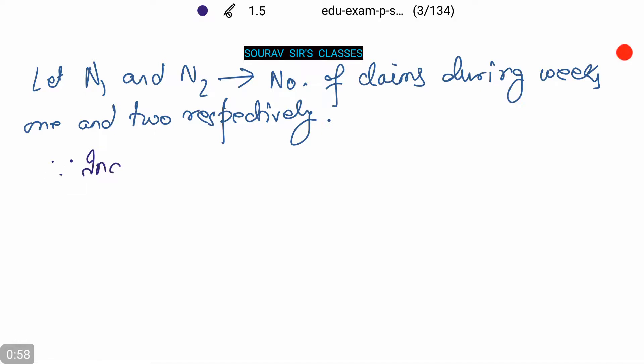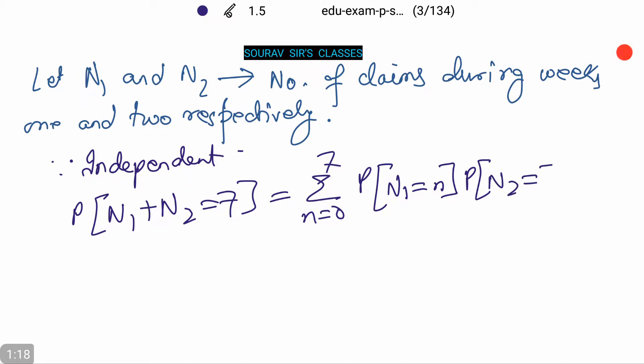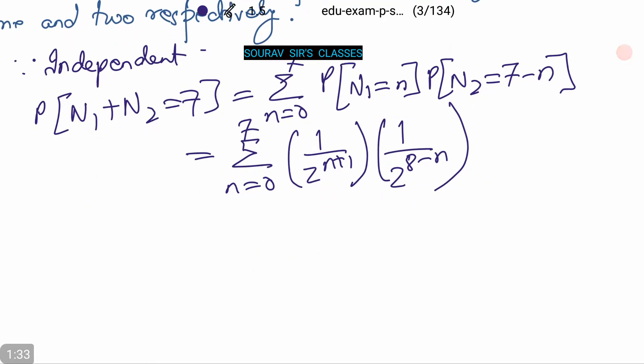Since they are independent, therefore P(N₁ + N₂ = 7) is nothing but the summation from n equals 0 to 7 of P(N₁ = n) times P(N₂ = 7-n), which equals summation n equals 0 to 7, [1/(2^(n+1))] times [1/(2^(8-n))]. Let us solve this.